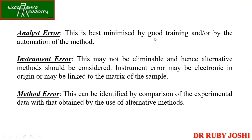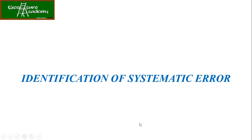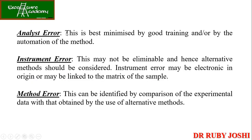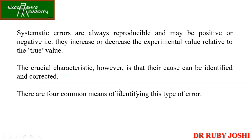The three common causes of systematic errors are: analyst error, which is best minimized by good training; instrument error, caused by improper calibration of the machine; and method error, which can be identified by comparison of experimental data with data obtained using alternative methods. Systematic errors are always reproducible and may be positive or negative — that is, they increase or decrease the experimental value relative to the true value.